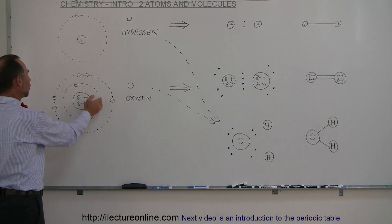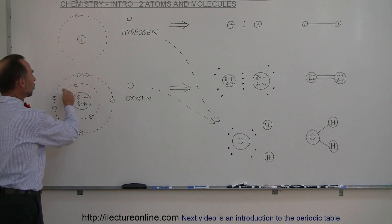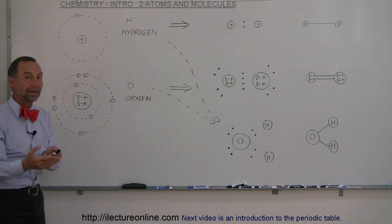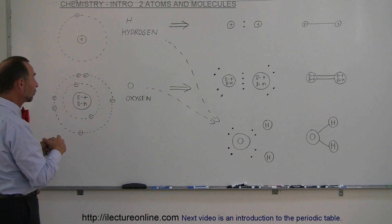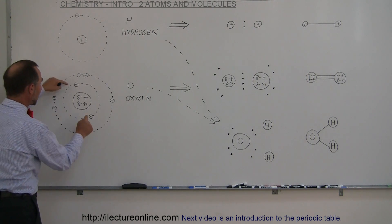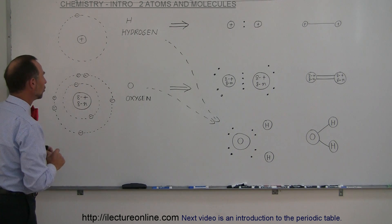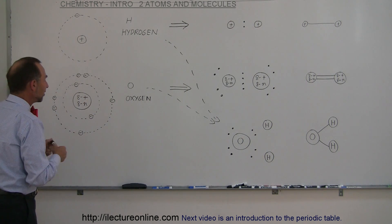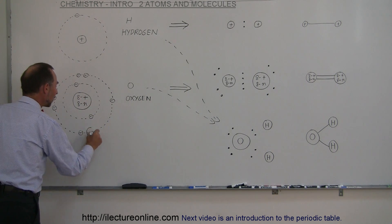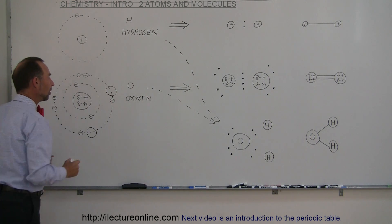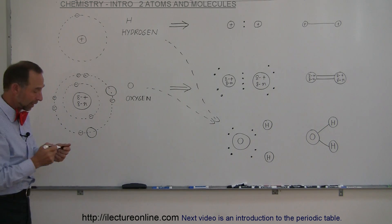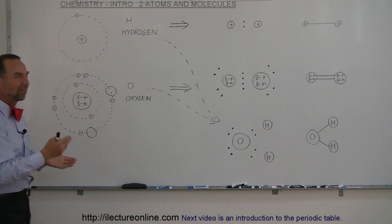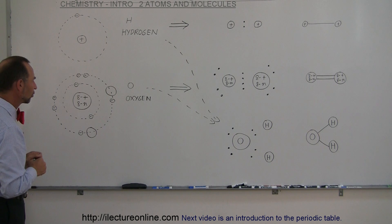For example, with oxygen we have what we call an inner energy level which has room for two electrons. Then there's a second energy level which has room for eight electrons. Since oxygen only has a total of eight, and two already occupy the inner energy level, there's only six electrons in the outer energy level, which means there are open spots for two more electrons. But oxygen doesn't need those two electrons because it only has eight protons, so it's what we call neutral. It has the same number of positive charges and negative charges.